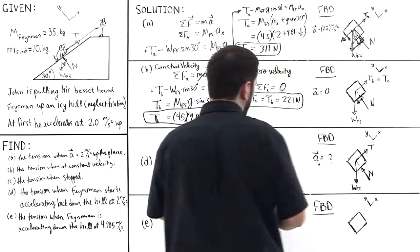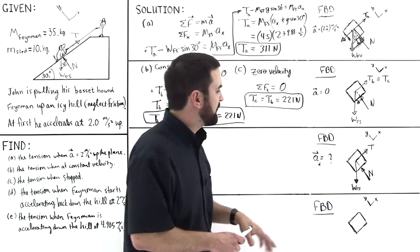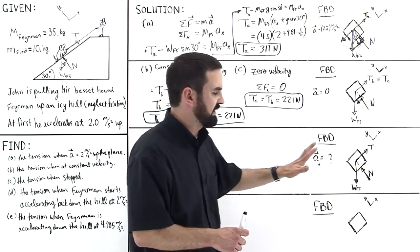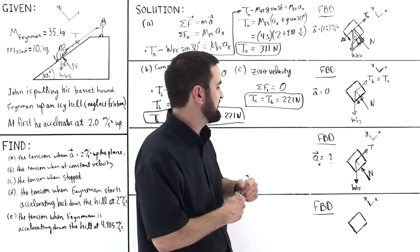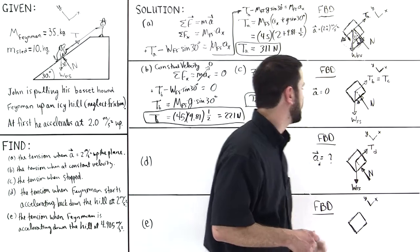So let's consider the free body diagram for this situation. The force analysis is the same. I've drawn it here. The forces are all acting in the same locations. This T will, of course, be different. It will be T for part D. We'll label it like that.